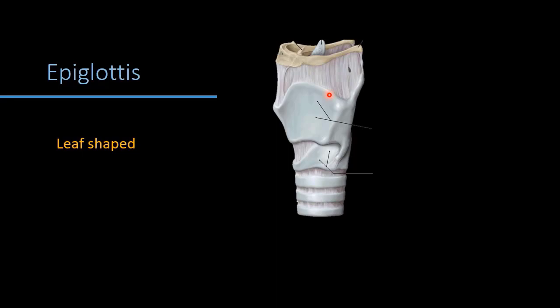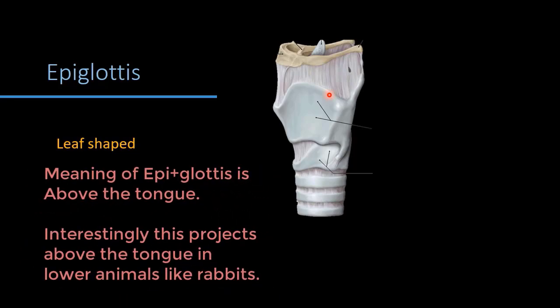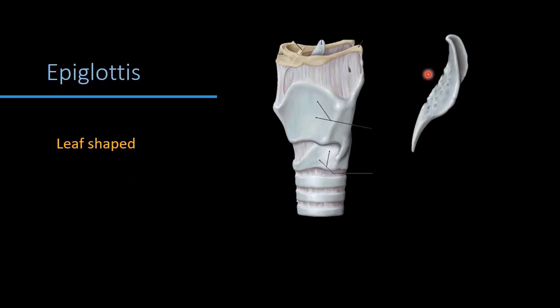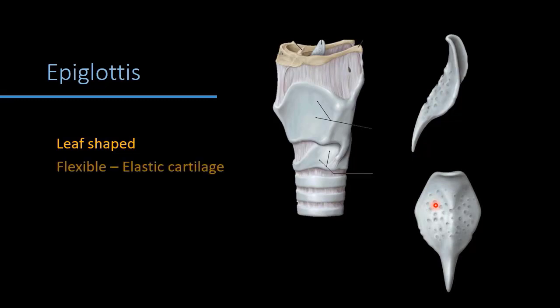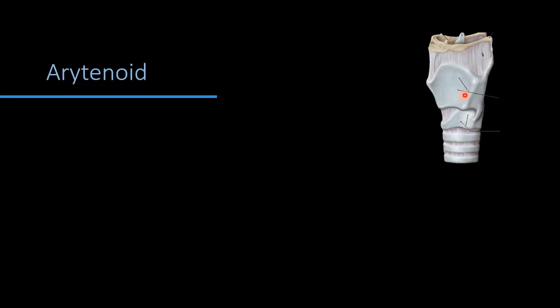The epiglottis is hidden inside, behind the lamina of the thyroid cartilage, in the form of a leaf. Its lower end is tapering and is attached to the inner surface of the thyroid laminae where they meet in the midline. It is the most flexible cartilage of the larynx and is made up of elastic variety.